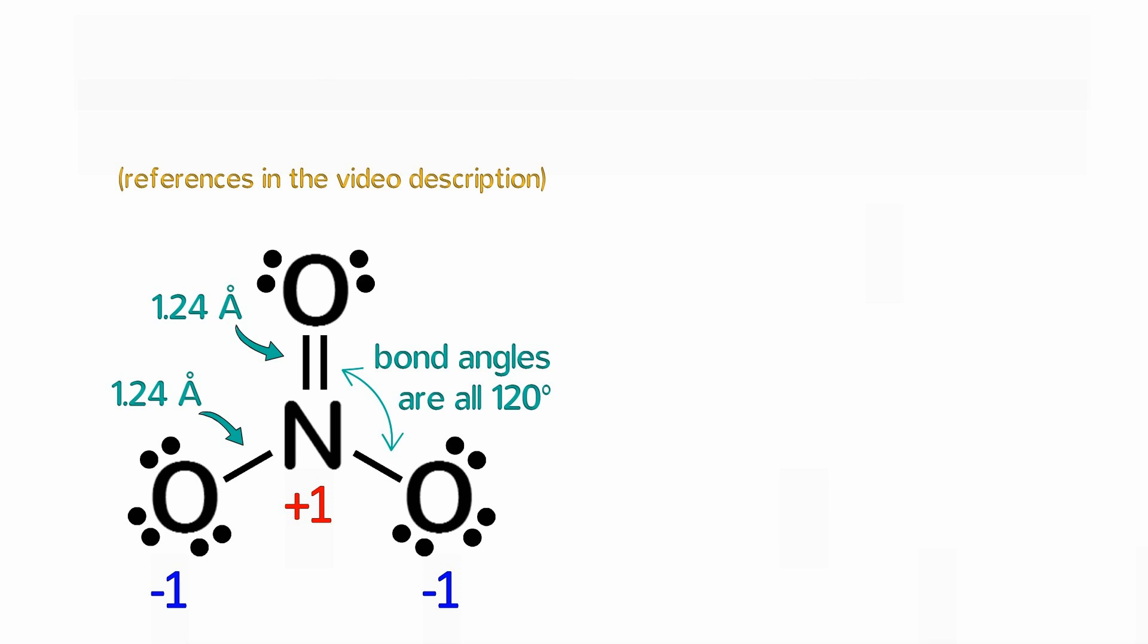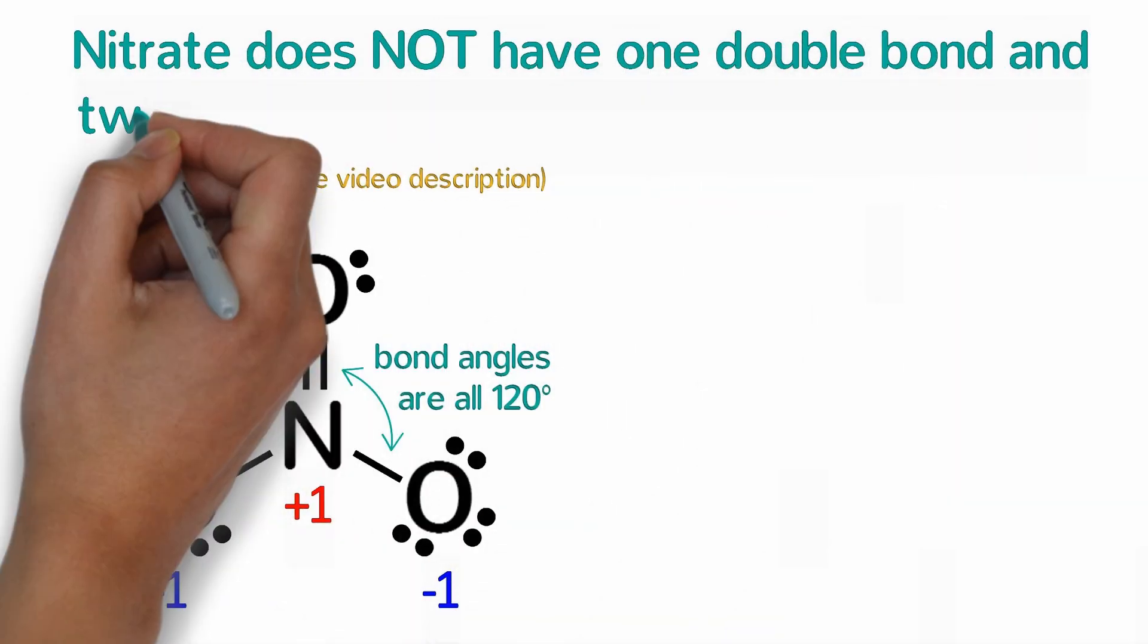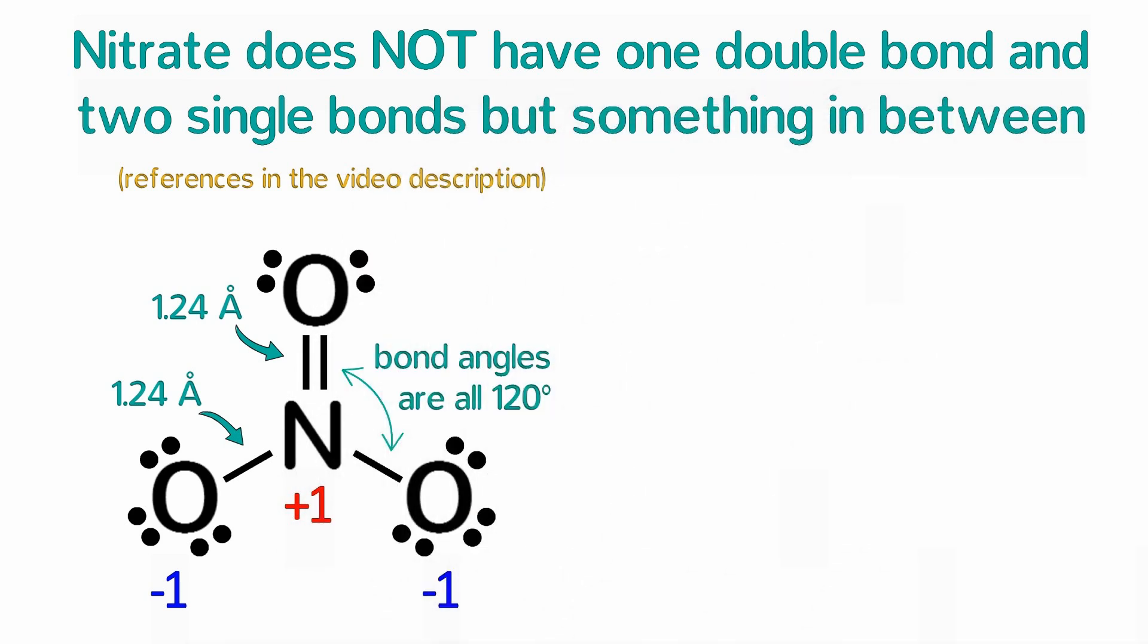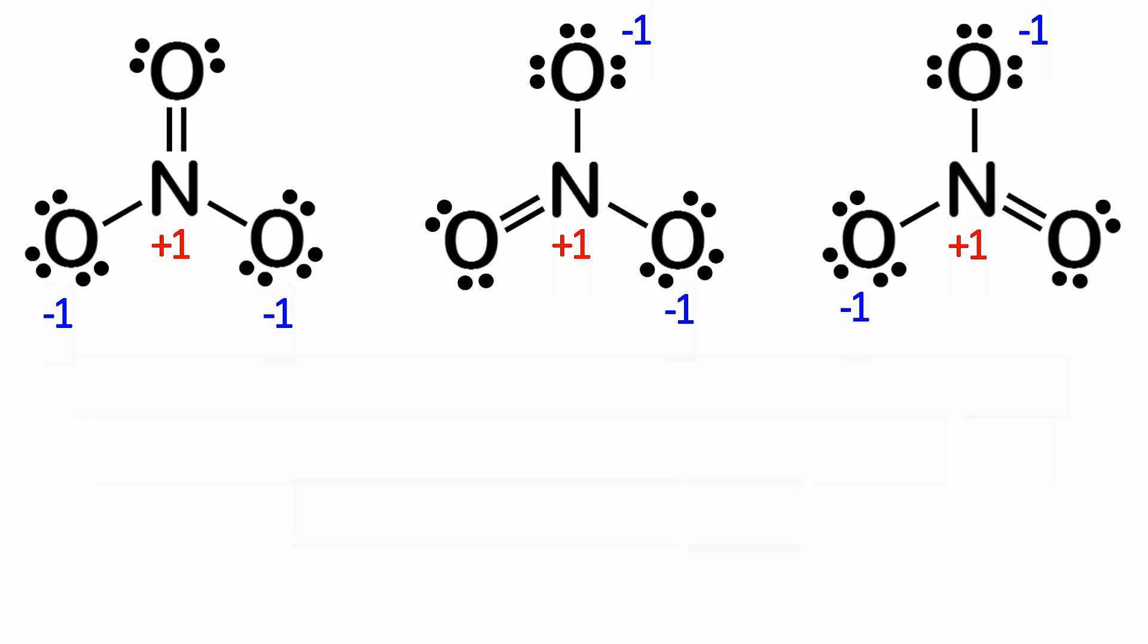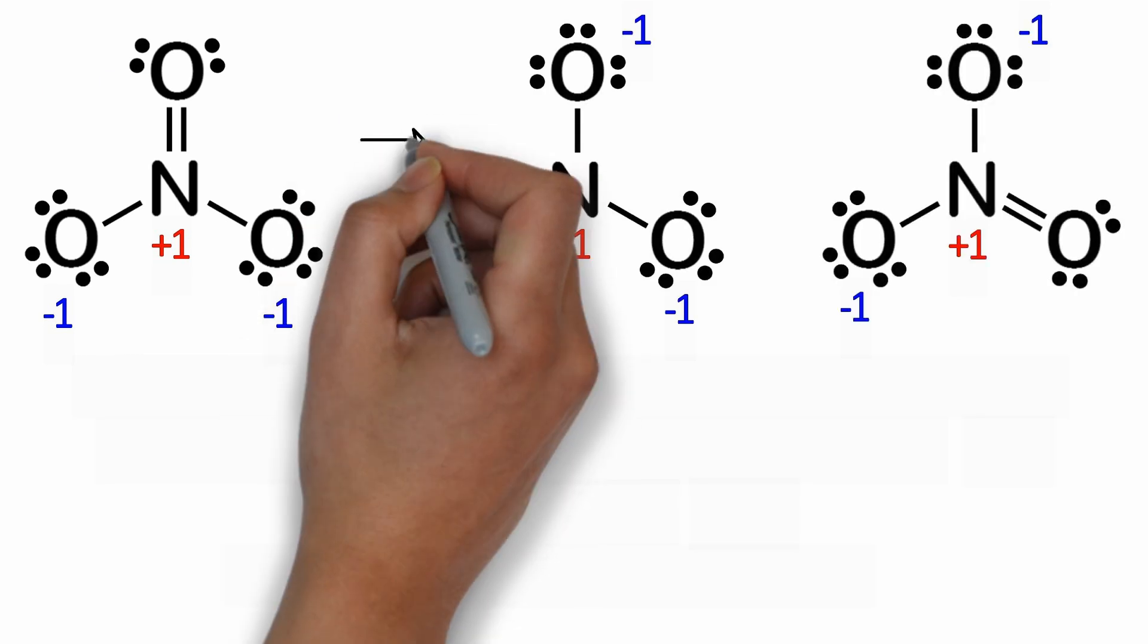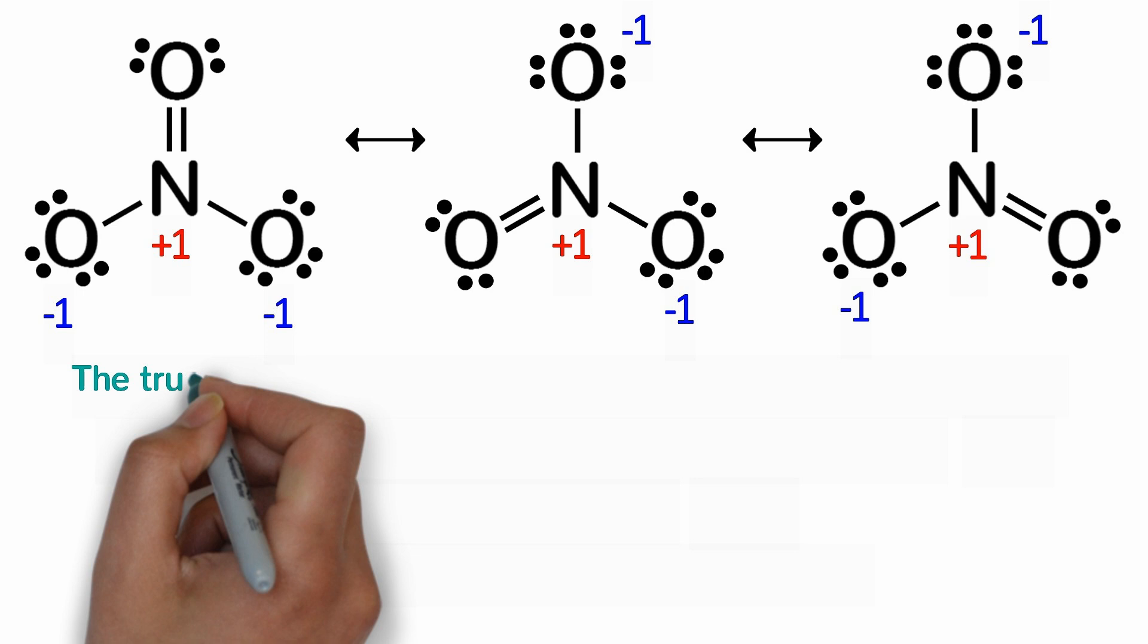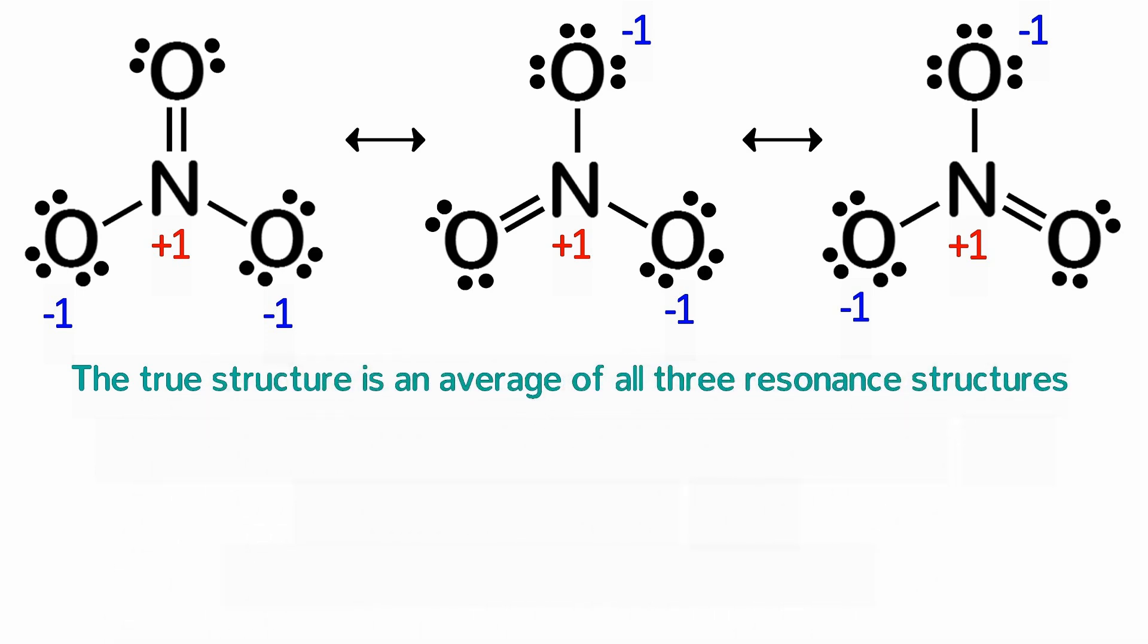So what does that mean? It means that nitrate does not have one double bond and two single bonds, but rather something in between. We can represent this by redrawing nitrate with the double bond in different locations and putting a double-headed arrow in between them. Keep in mind that nitrate is not rotating and the double bond is not moving. Rather, the true structure is an average of all three structures, while the individual resonance structures are all incorrect.